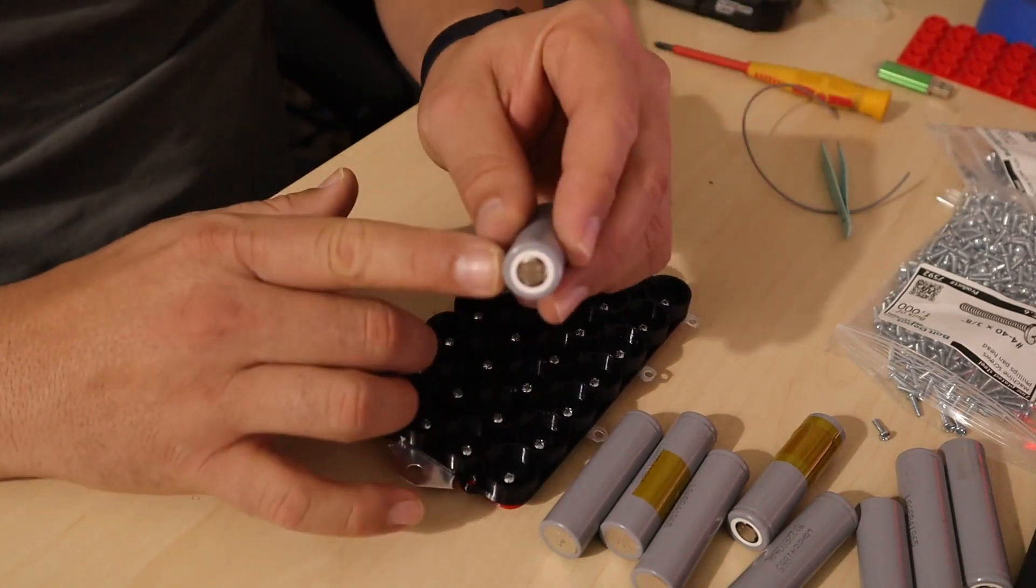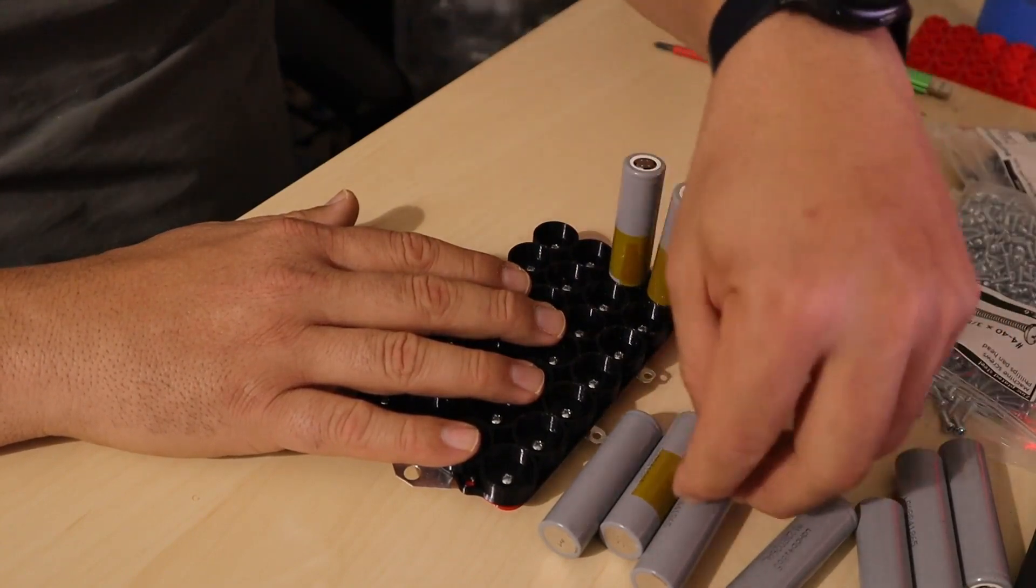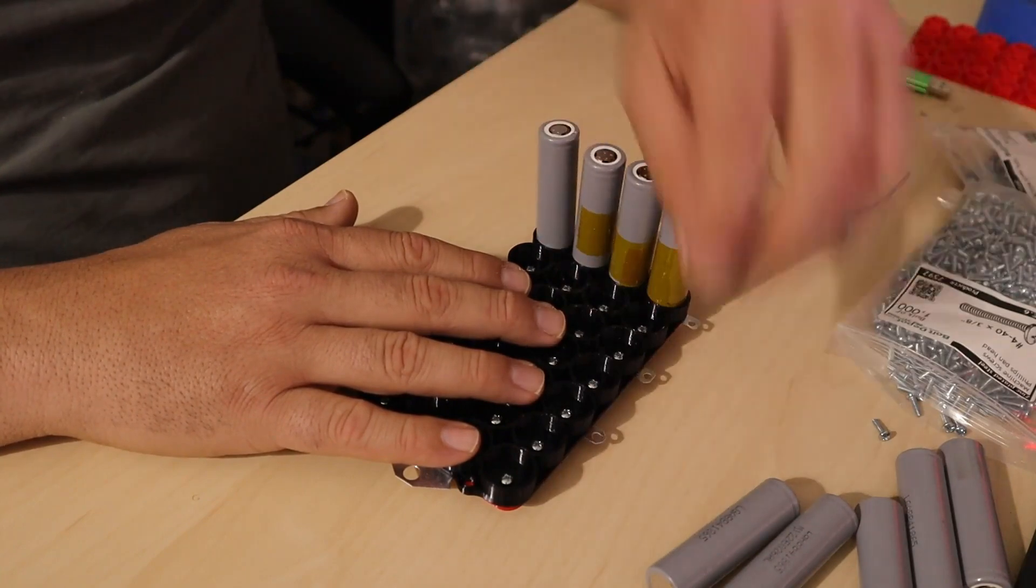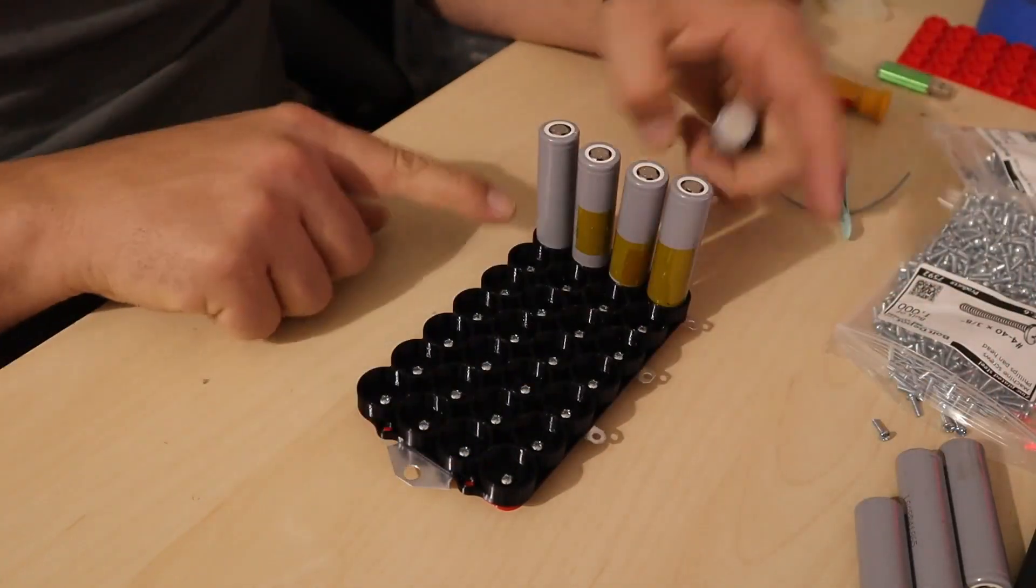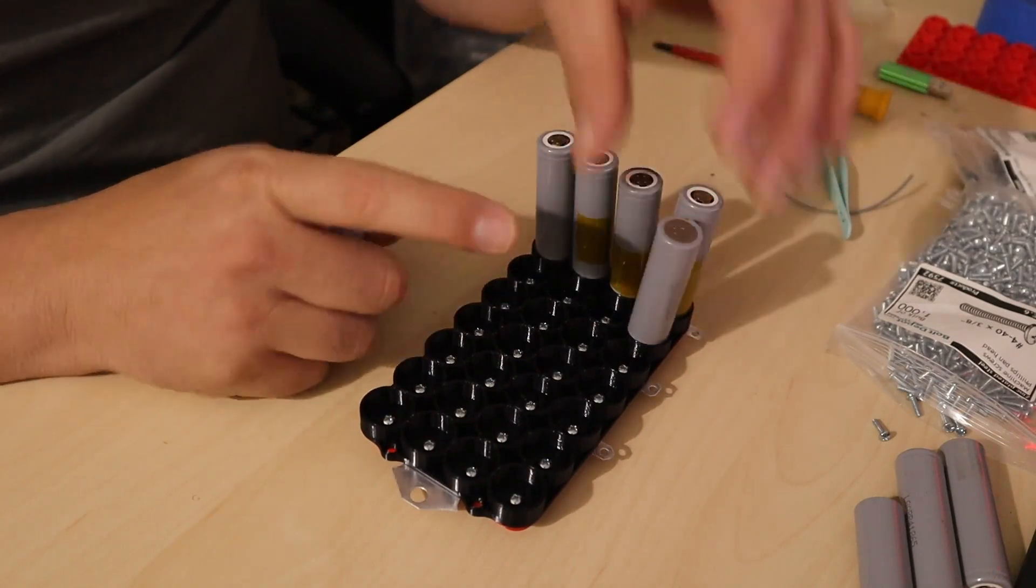You're going to take a battery on the first row starting from the left, and every single battery in that row needs to be facing up—the positive side needs to be facing up. On the second row, every single battery, the negative side needs to be facing up.